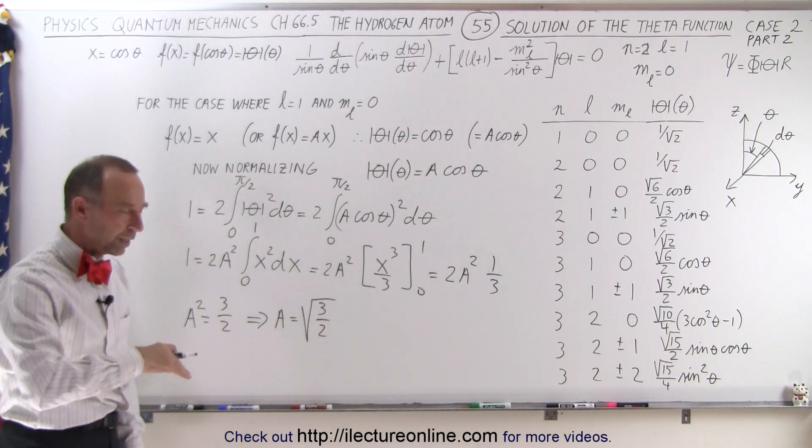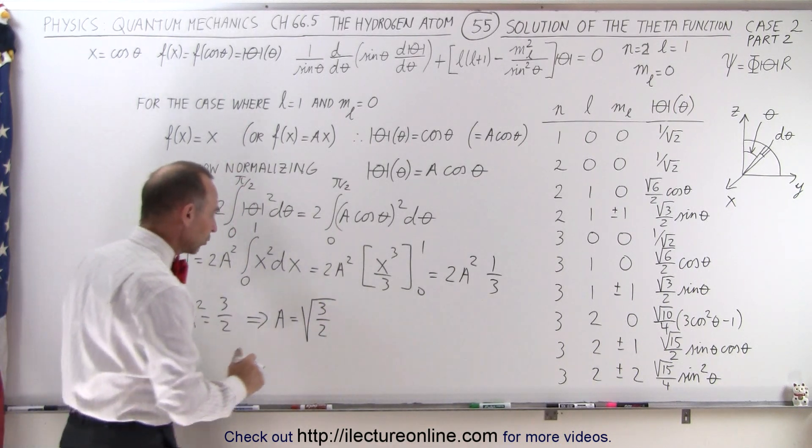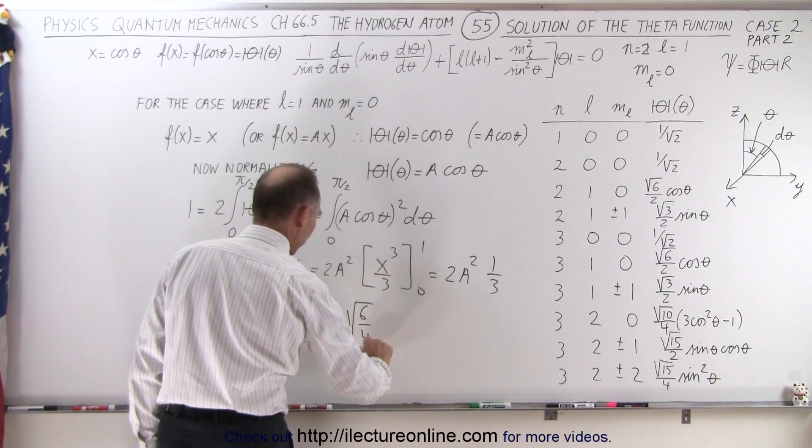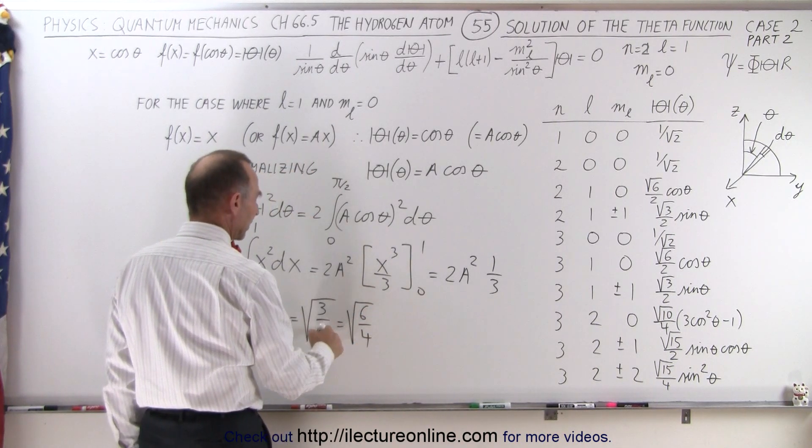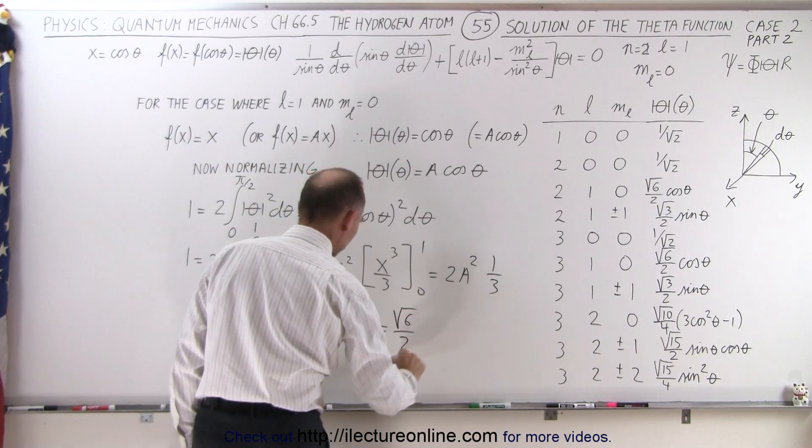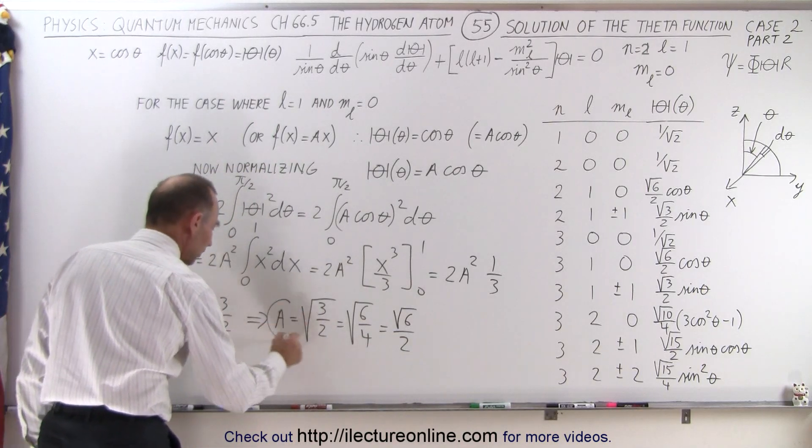Which means that a is equal to the square root of three divided by two. And now if we multiply both the numerator and the denominator by the square root of two, so this becomes equal to the square root of six over four. And that way you can get the denominator outside the radical, so this becomes equal to the square root of six divided by two. And so that's equal to the value a.